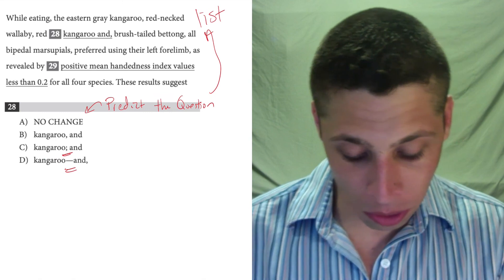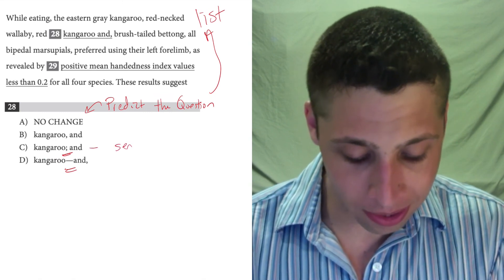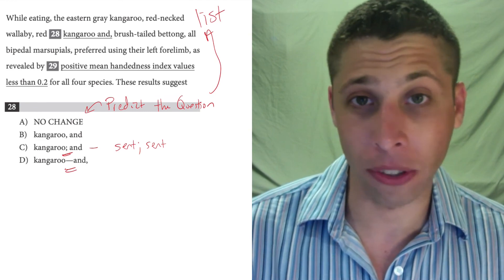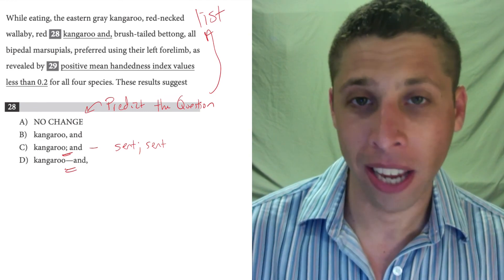Especially because if we're going to use a semicolon, remember we need to have a sentence before and a sentence after the semicolon. The thing before is not a full sentence. It just literally cuts off in the middle of the list.